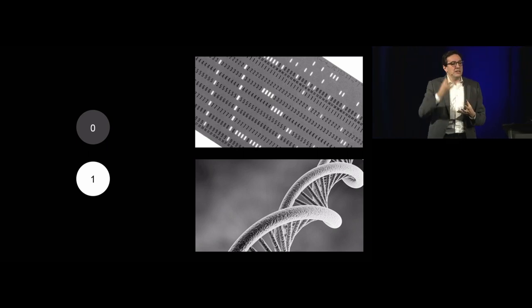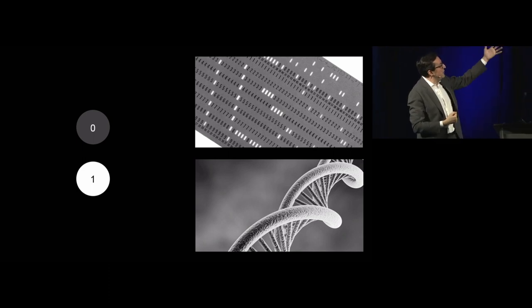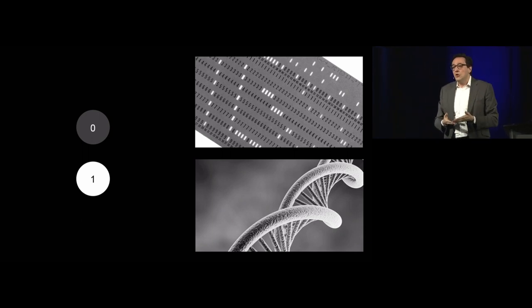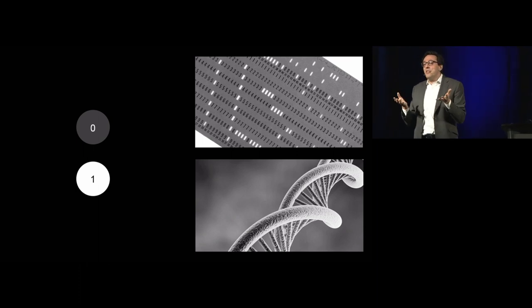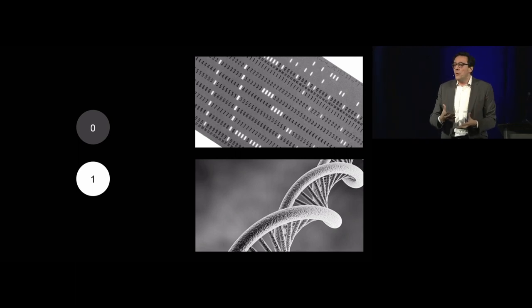In that abstraction, in thinking about these zeros and ones as this world of almost platonic ideals of perfection, it allowed us to actually see the world differently. We could come to appreciate that things as different as an old punch card or DNA, where prior to Claude Shannon we would have thought those things have nothing in common, now we get to see them and understand that they're both carriers and processors of information.